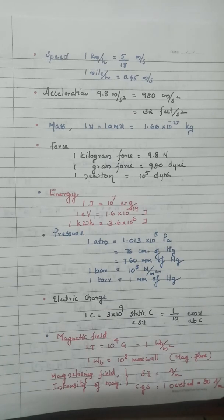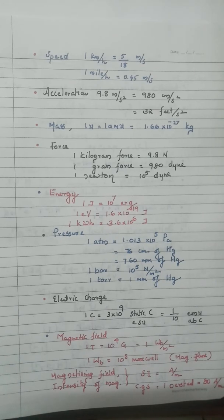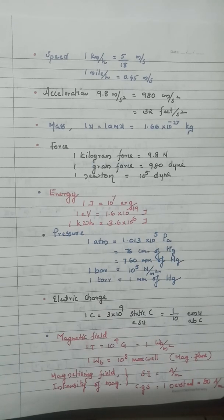Important force and energy units: one joule equals 10⁷ erg, one electron volt equals 1.6 × 10⁻¹⁹ joule. One kilowatt hour, the commercial unit of energy, equals 3.6 × 10⁶ joule. For pressure: one atmospheric pressure equals 1.013 × 10⁵ pascal, also equal to 76 cm of mercury or 760 mm of mercury. One bar equals 10⁵ pascal, and one torr equals one millimeter of mercury.